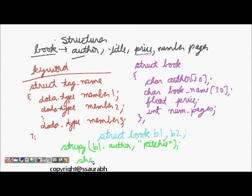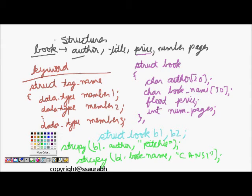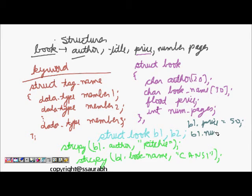Then I will say strcpy b1 dot book name and then I will write C ANSI, something like that. So this is for copying. And then the next element is b1 dot price, let's say 50.